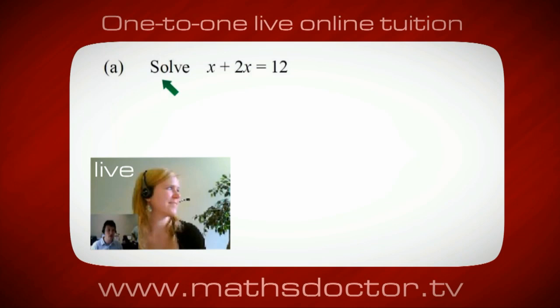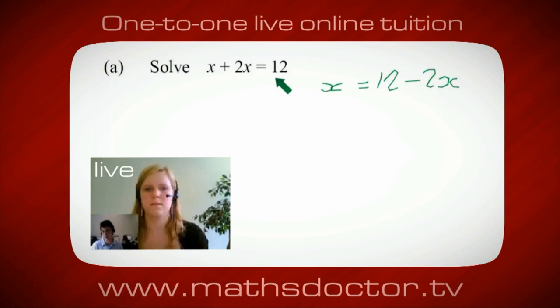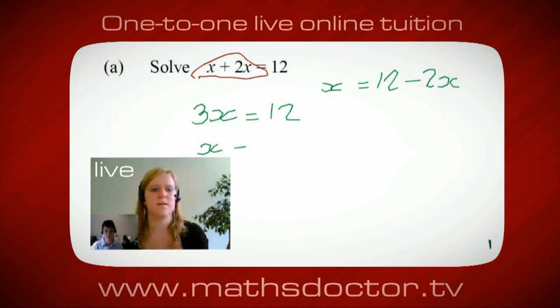Let's have a look at this one — solve x plus 2x equals 12. What do you think you do first? I want x on its own, so I would put x equals 12 minus 2x. Well, a lot of the time we want to get x by itself, but what we want to do first is get all of the x's together. Can you see anything we can do? Get all these together in one place. Oh okay, it's 3x! Yeah, absolutely — so 3x equals 12, and so x equals 4. Brilliant, spot on, well done.